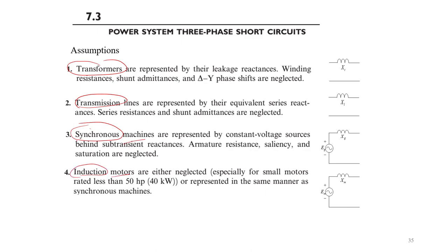The source of energy in a power system mostly comes from the synchronous machine, and most of the loads are represented by induction motors. The transformer is represented by the leakage reactance. For large transformers in transmission systems, we express the transformer by just a single reactance — the leakage reactance. The resistance, shunt admittance, and phase shifting due to different primary/secondary connections are neglected.